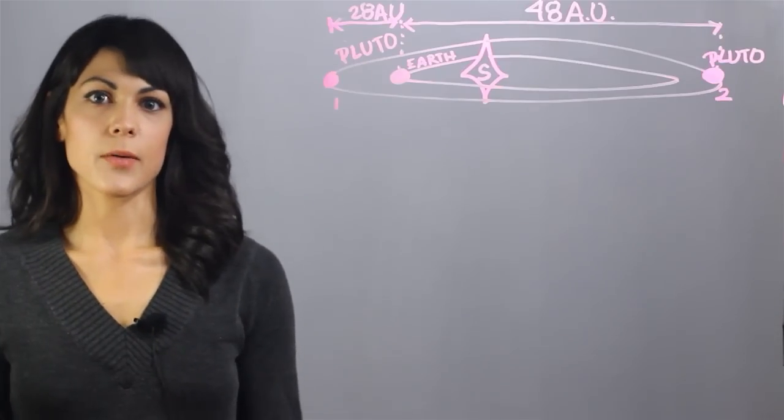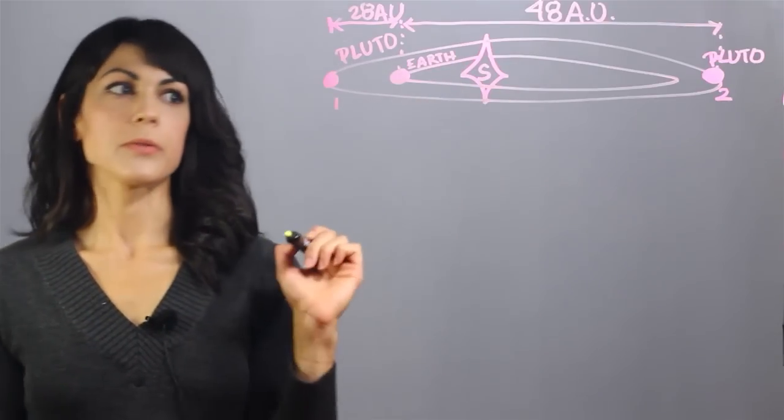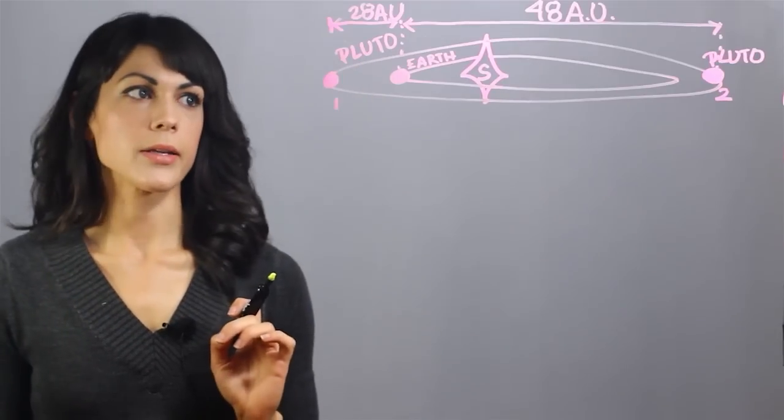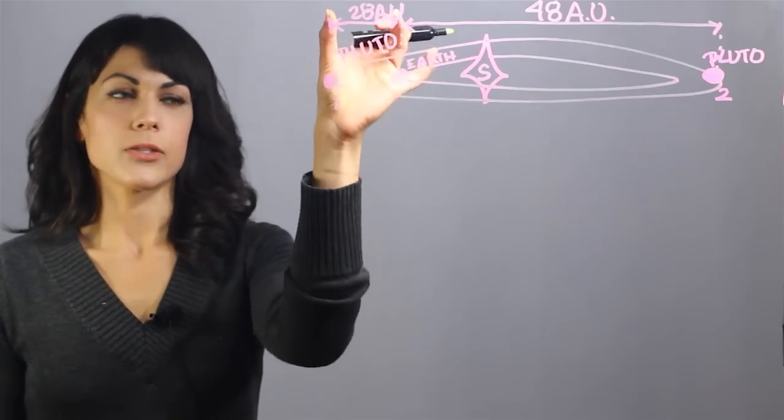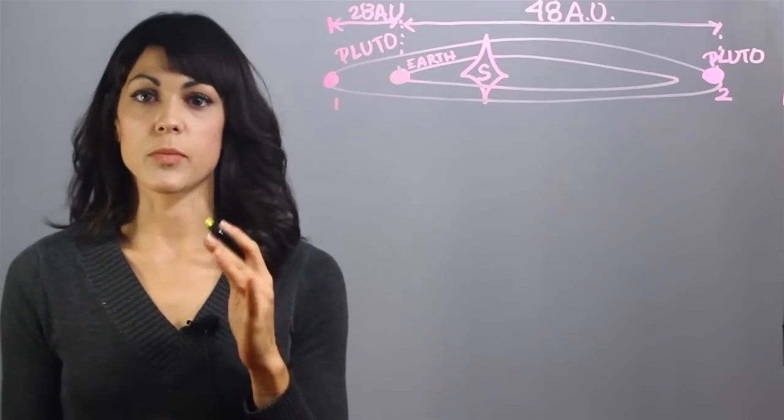The first thing I want to talk about is the distance from Pluto to Earth. As we can see in the diagram, if we have the Sun in the middle, Earth here, and Pluto in this first spot, this distance is 28 astronomical units. One astronomical unit is the distance from the Earth to the Sun.